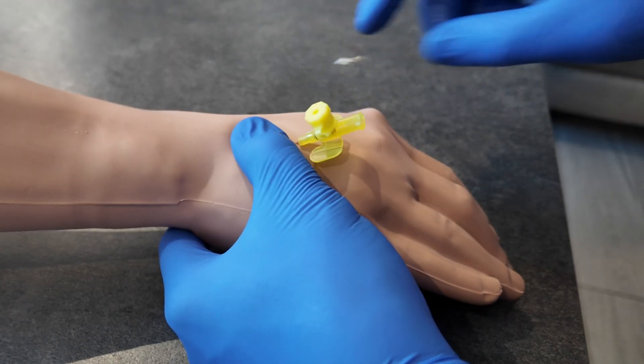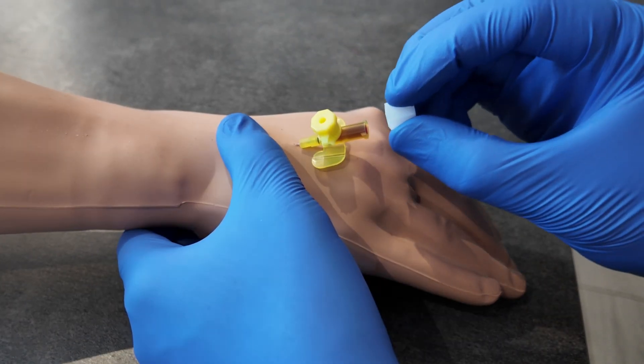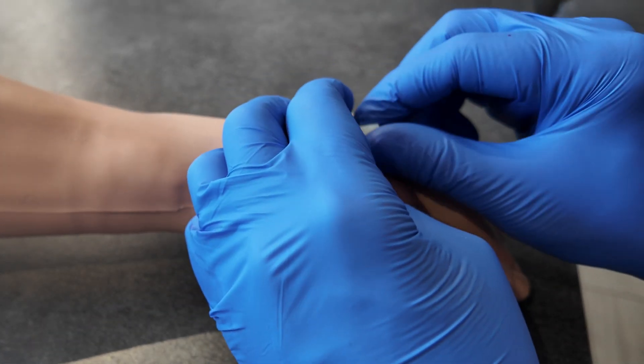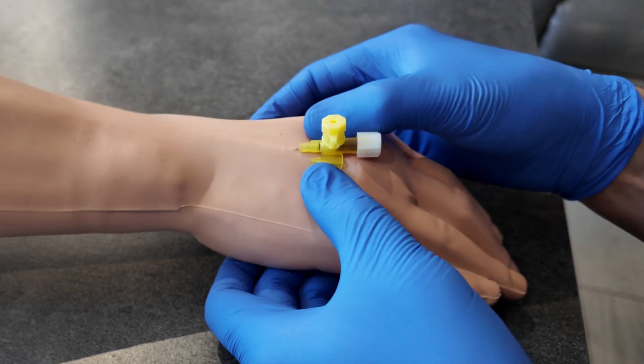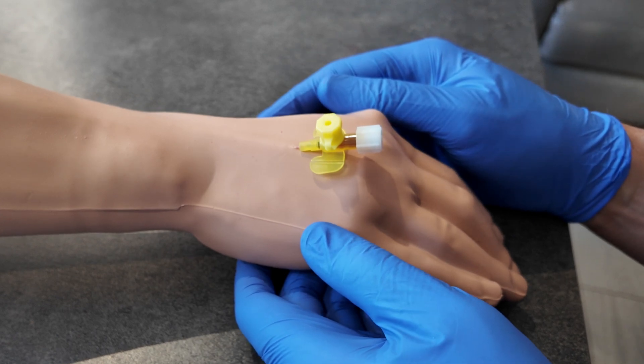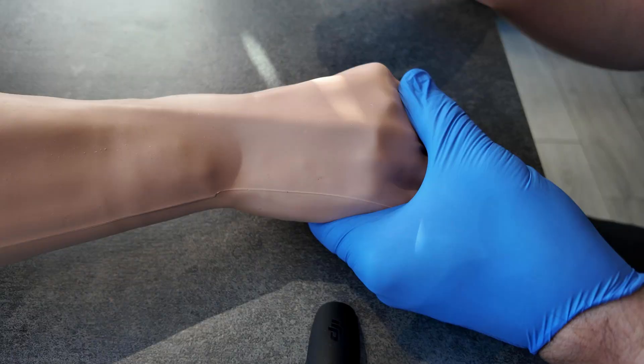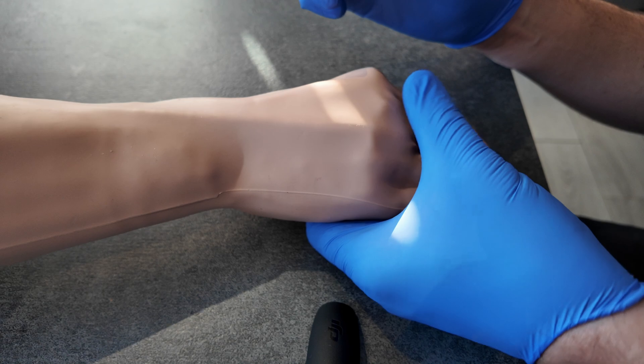So a bit of pressure, needle comes out. Take your white luer lock cap and just place that on the end like so, and then you're ready to secure your cannula. We'll look at that from another angle with a different vein.